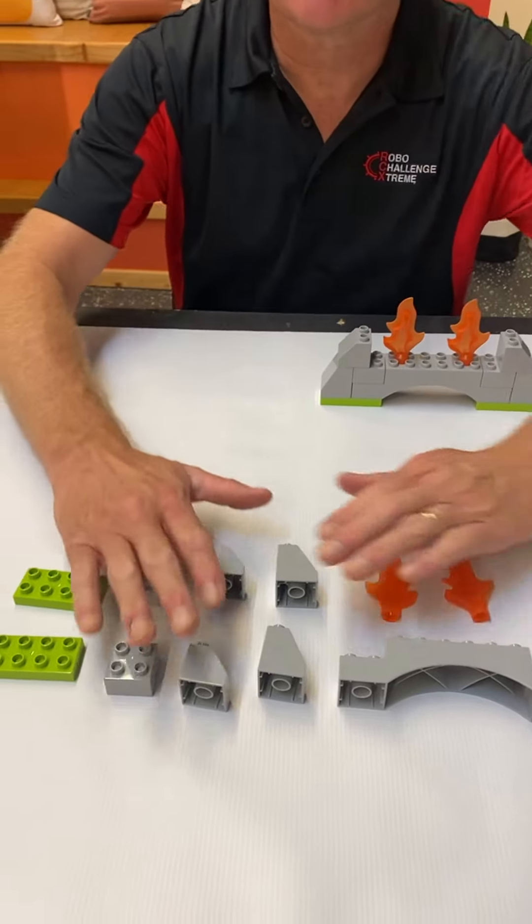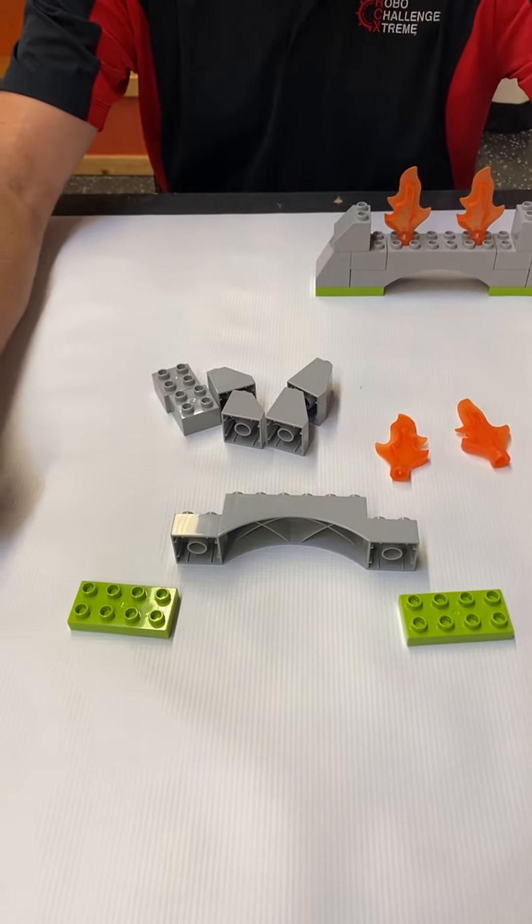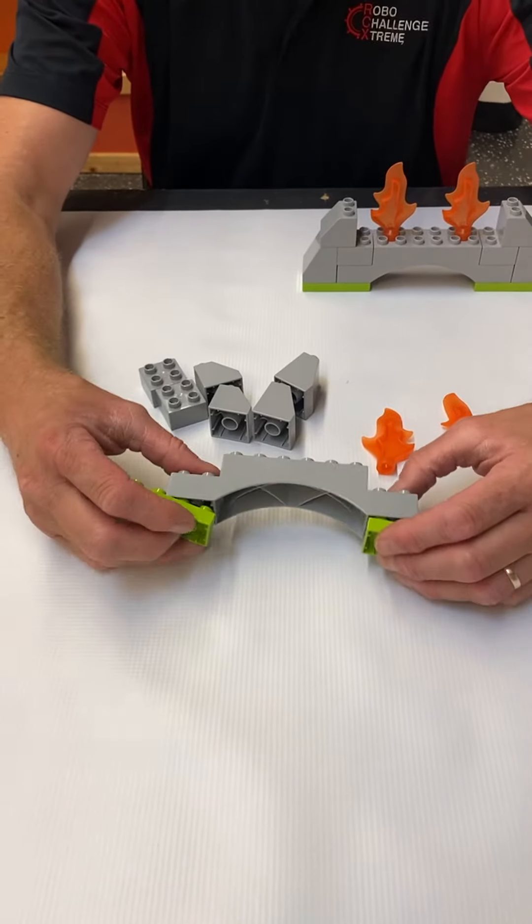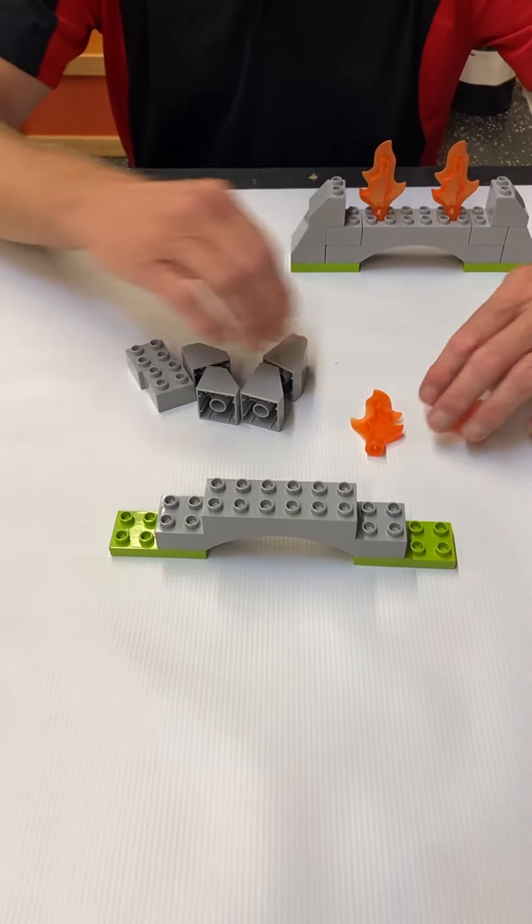So let's get constructing. Take your archway, take the 2x4 green plates, assemble them as such, and lay it flat on the surface.